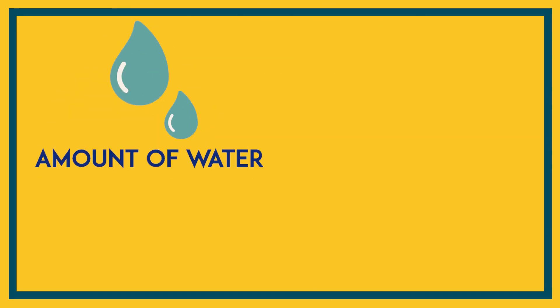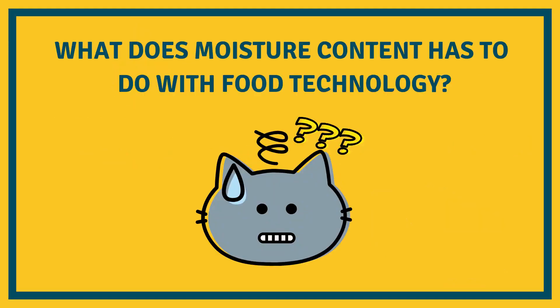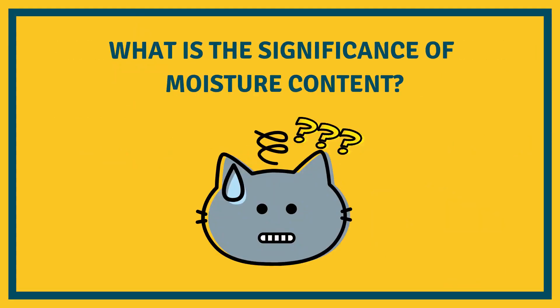Simply speaking, moisture content is the amount of water in a moist sample. But what does moisture content have to do with food technology? What is the significance of this topic?